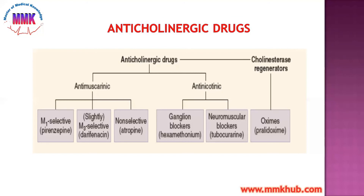The second class is M3 selective drugs, which slightly inhibit M3 receptors. These drugs are bladder-specific and work on the urinary bladder. The drug in this category is Darifenacin, used for urinary incontinence — when a patient is producing excessive urine and cannot control it, Darifenacin is used to inhibit that.